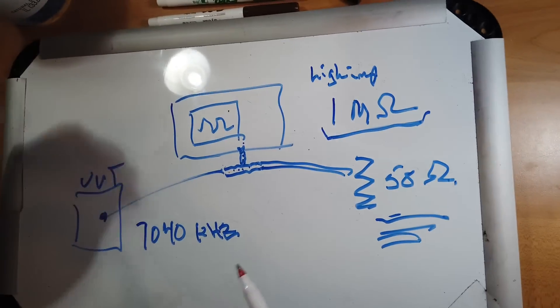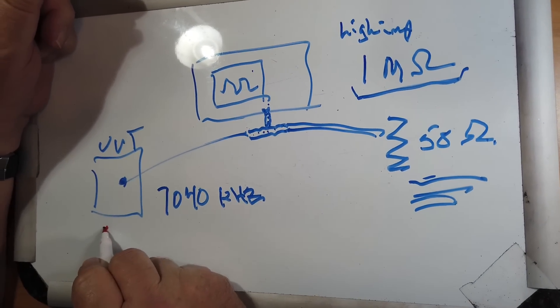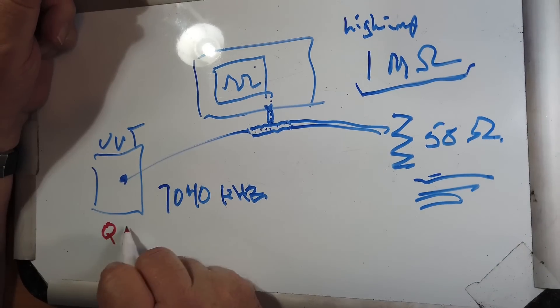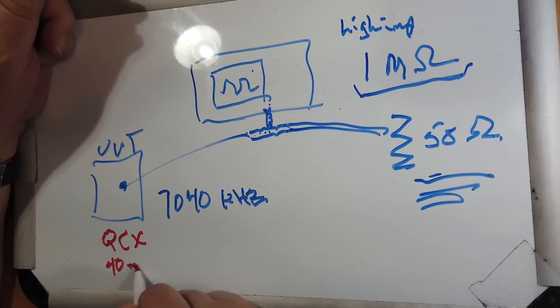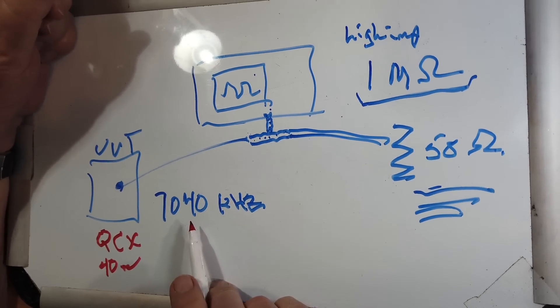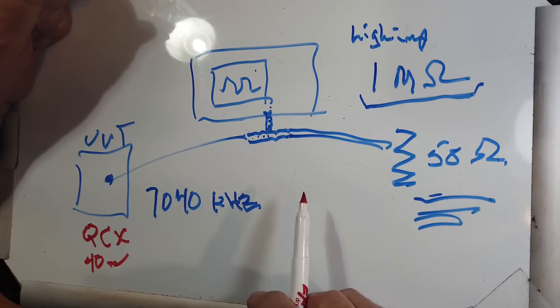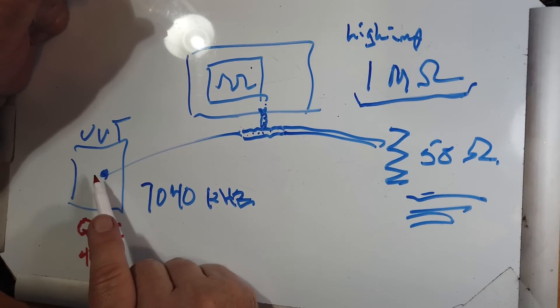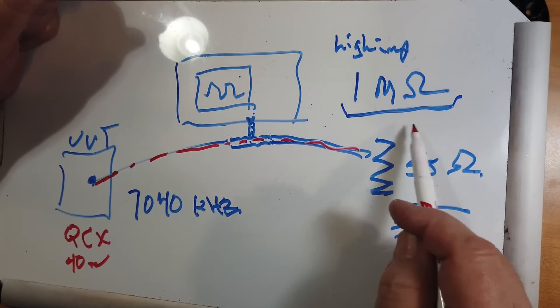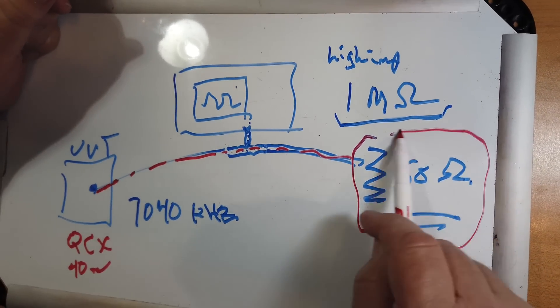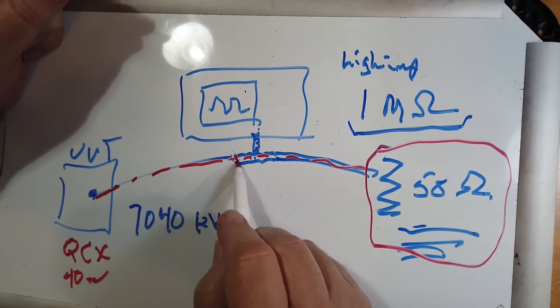We're going to take a look at the configuration here. This is the unit under test, which happens to be a QRP Labs QCX on 40 meters. It's on 7040, which is sort of the QRP calling frequency. So this is the unit under test. There's a piece of coax connecting that directly to the dummy load, which is this right here. It's my Heathkit dummy load. And then I bring it through a little T. Literally, it's a coax T.